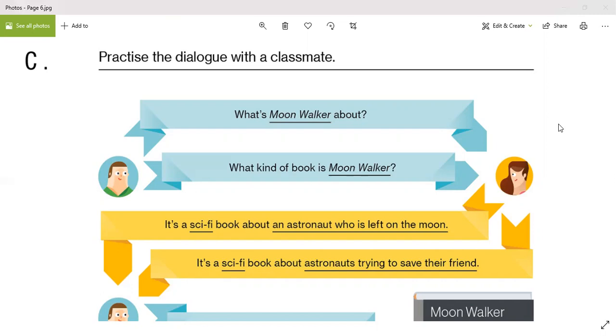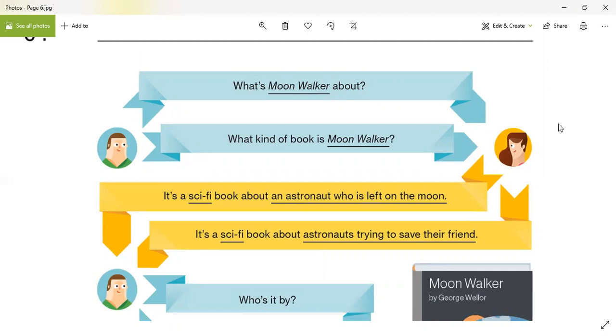Okay. So here we have a book called Moonwalker. What's Moonwalker about? It's a sci-fi and horror book. Well, hold on. Again, what is Moonwalker about? Moonwalker is a sci-fi book and horror. Well, it's about an astronaut who what? An astronaut who was left on the moon.